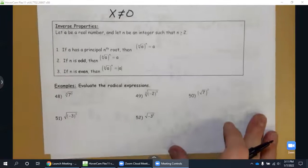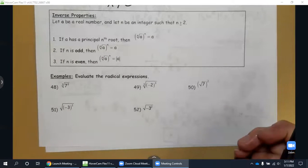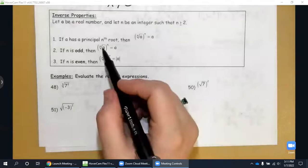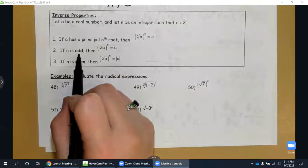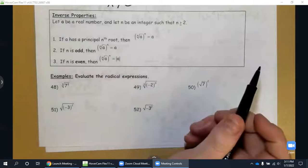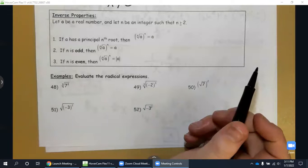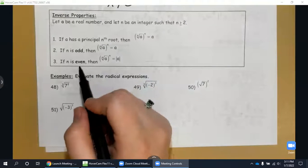Alright, last part. This is the inverse properties, and we've already done some practice with that. But that is that if we are taking the nth root and raising it to the n power, for an odd value it matches whatever number is inside of that radical. So if it's negative, a is negative. When it's even, it's the absolute value, meaning that it's always positive.